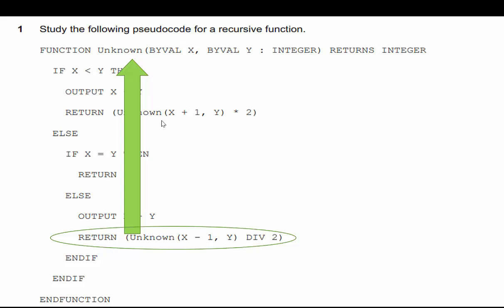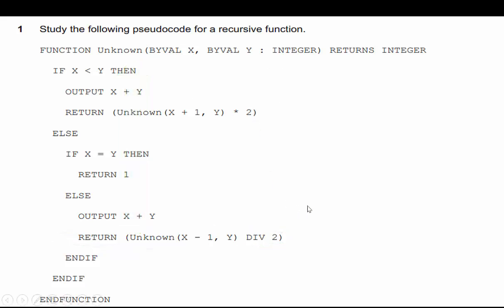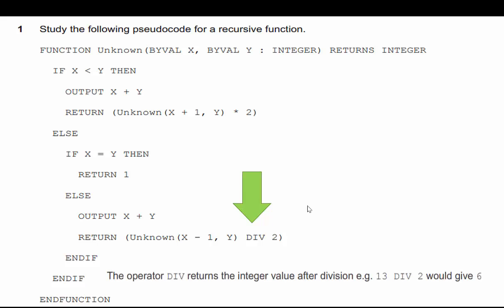This time instead of x+1 being passed as a parameter, it's going to be x-1, and instead of multiplying by 2 we're going to be dividing by 2. We need to pay close attention to 'div 2' because it means something specific. Cambridge tells us on the exam: the operator div returns the integer value after division — 13 div 2 gives 6. This is not rounding; it simply drops the decimal.